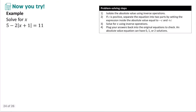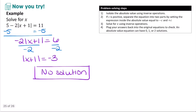Pause the video and try this example on your own. In this problem, we subtract 5 from both sides and then divide by negative 2, and we see that |x + 1| = negative 3. Since an absolute value can't equal a negative number, this equation also has no solution. Always isolate the absolute value first before solving.